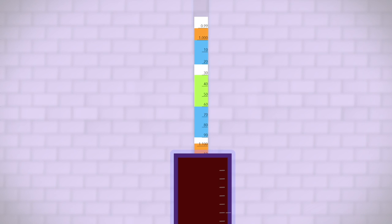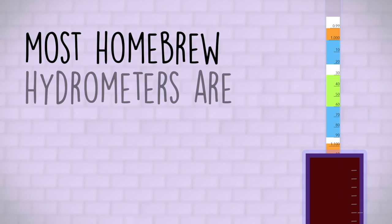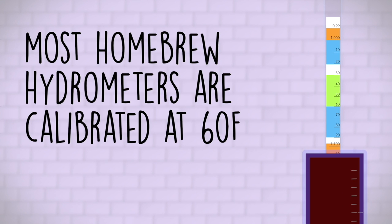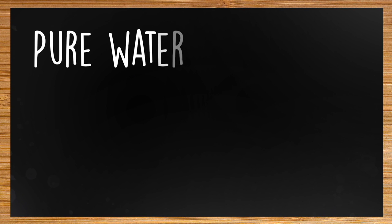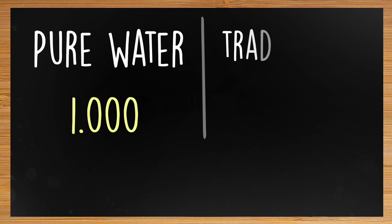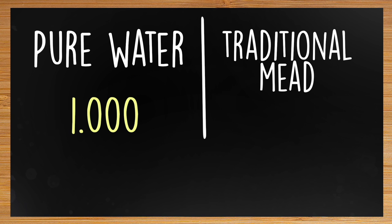So how do you read one of these things? It's fairly simple. Don't let all the numbers and markings intimidate you. Most homebrew hydrometers are calibrated at 60 degrees Fahrenheit. Homebrewers are typically using hydrometers to measure specific gravity. This is the ratio of the must's density to the density of water. For example, pure water should give a reading of 1.0, while a traditional mead might read at around 1.09 prior to fermentation.